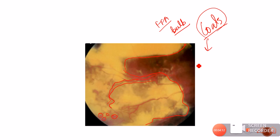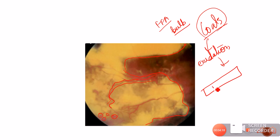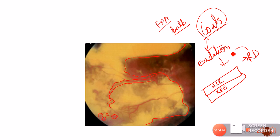This sub-retinal exudation can be so extensive that it detaches the neurosensory retina from the retinal pigment epithelium, causing retinal detachment. Because this detachment occurs due to exudation, it is called exudative retinal detachment.